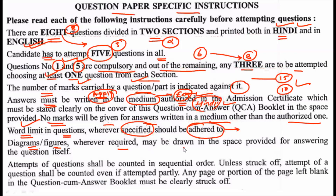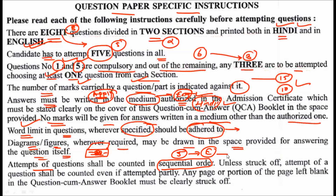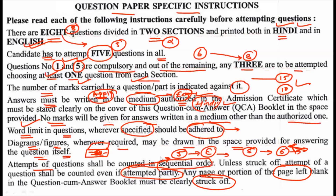Diagrams and figures, whenever required, may be drawn in the space provided for the answer itself — do not ask for a separate sheet. Attempts at questions shall be counted in sequential order, meaning the first five questions attempted will be taken for evaluation. If you attempt questions only partly, they will still be counted. Any blank pages left in the answer sheet should be struck off to avoid confusion during evaluation.